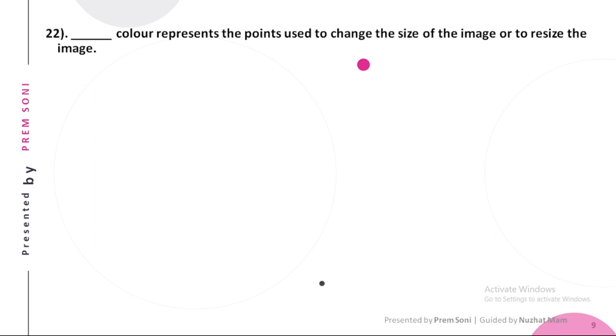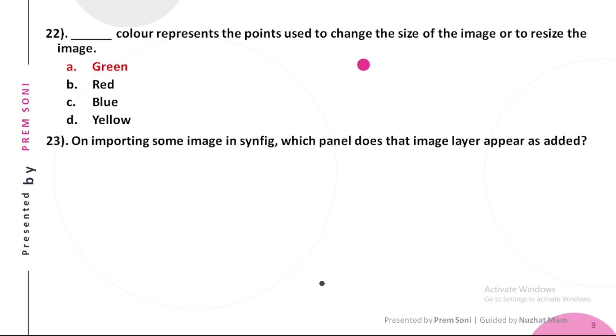Twenty-second, dashed color represents the points used to change the size of the image or to resize the image. Options are: a. Green, b. Red, c. Blue, d. Yellow. The answer is Green. Twenty-third, on importing some image in Synfig, which panel does that image layer appear as added? Options are: a. Layers panel, b. Master panel, c. Inline panel, d. Any of the given. The answer is Layers panel.